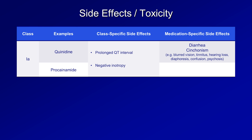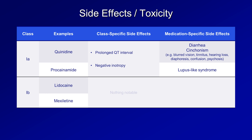Procainamide is associated with the development of a lupus-like syndrome. Moving to the 1b drugs, there are no notable class-specific side effects, but lidocaine has significant CNS toxicity — pretty much anything bad that can happen to your nervous system can be seen with lidocaine. Mexiletine's most common side effects are related to GI distress, such as nausea and vomiting.